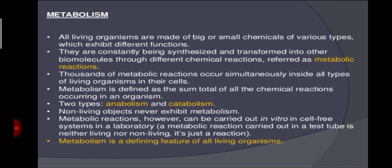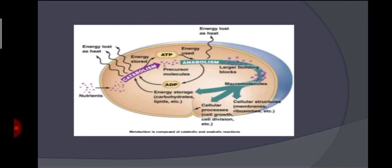The important differences between anabolism and catabolism are: anabolism is the sum total of constructive processes, while catabolism is the sum total of destructive processes. In anabolism, complex substances are formed from simpler ones, whereas in catabolism simpler substances are formed from complex ones. In anabolism energy is stored, and in catabolism energy is released. Anabolism is required for growth and maintenance, whereas catabolism is required for performance of activities.